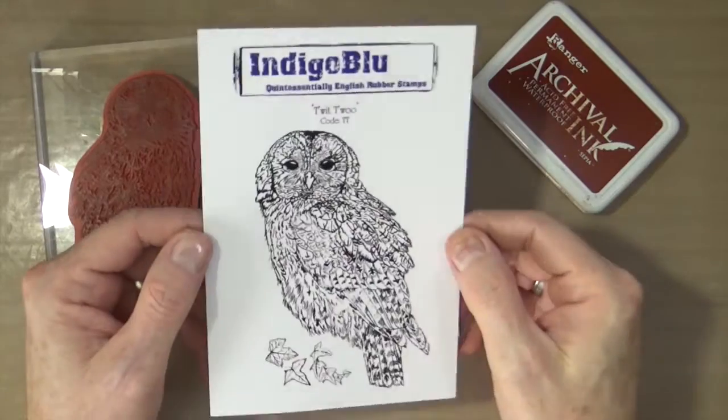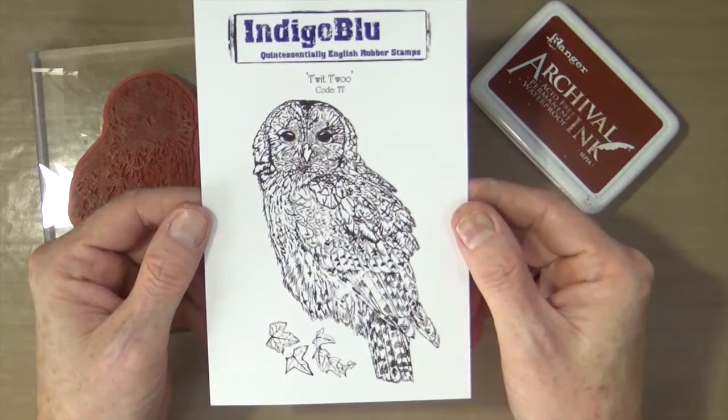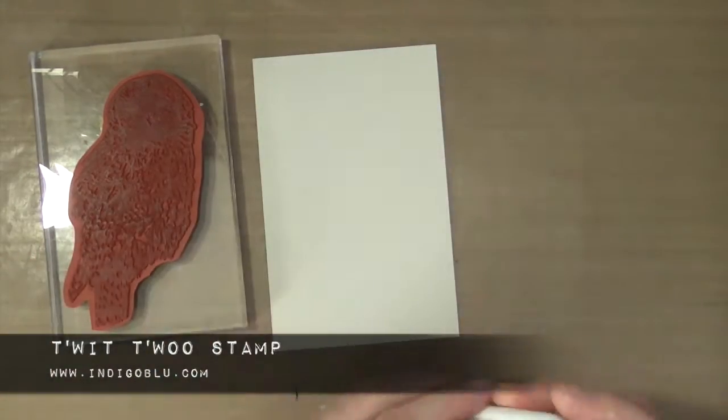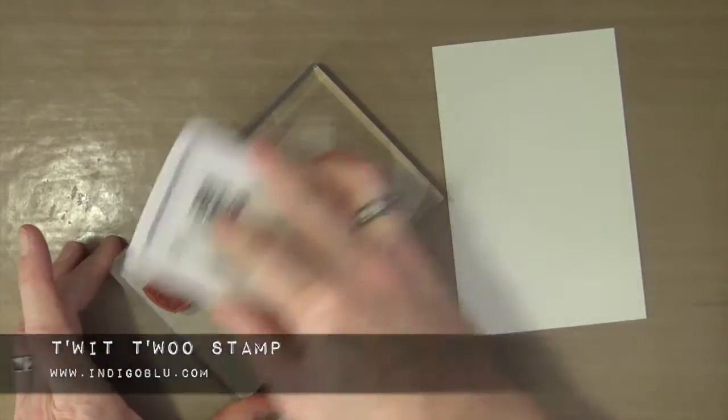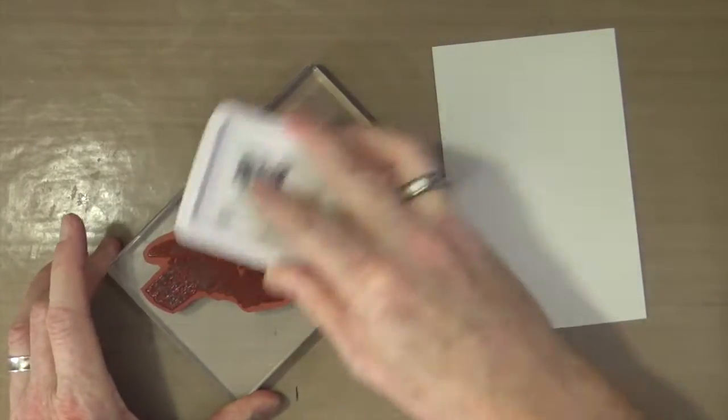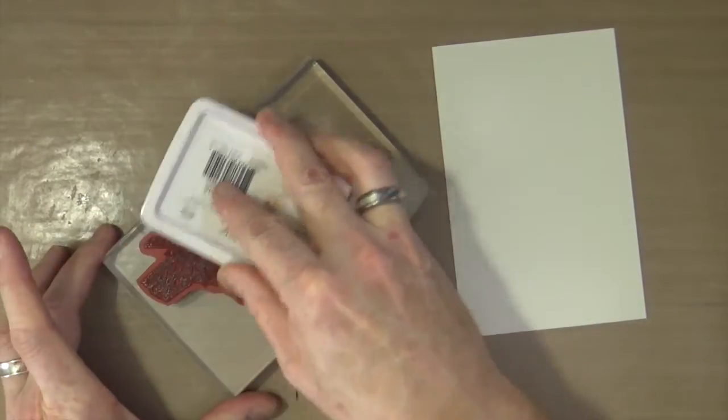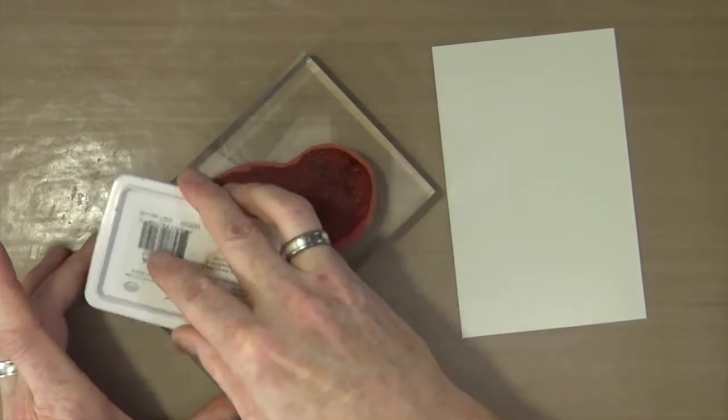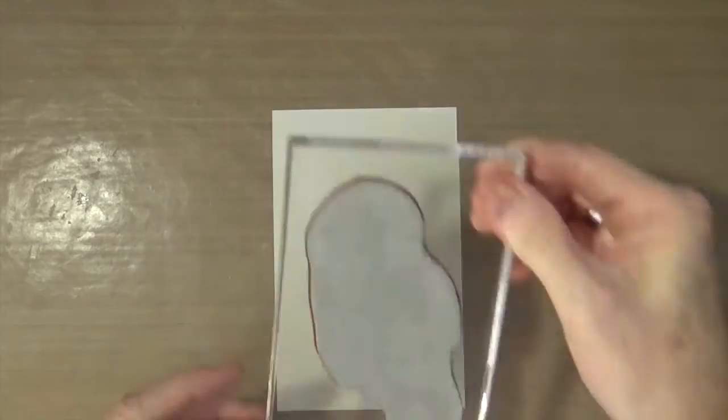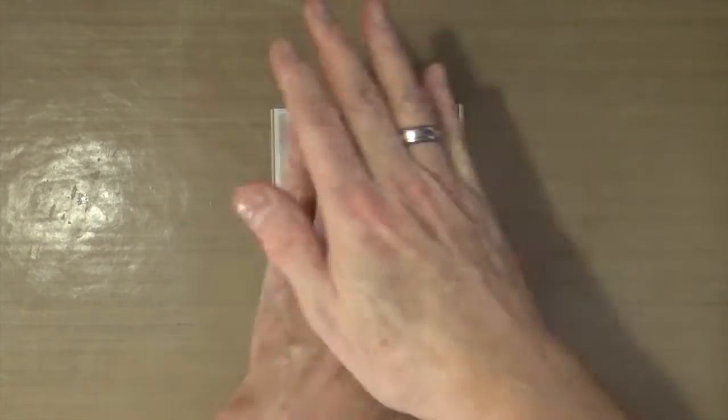For my next focal point, I'm using the Twigged Twoo Owl Stamp from Indigo Blue. This is an A6 or A2 sized stamp, so it's very good size. I'm inking it up using the sepia archival ink and stamping it onto a piece of off-white cardstock.